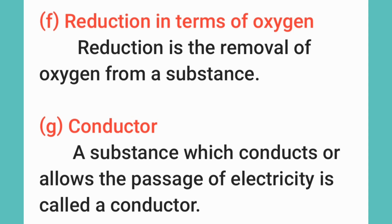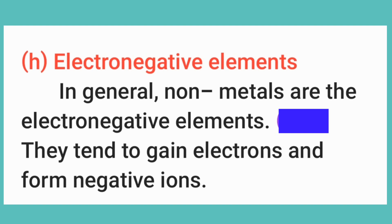Number G: Conductor. A substance which conducts or allows the passage of electricity is called a conductor. In general, non-metals are the electronegative elements — they tend to gain electrons and form negative ions.